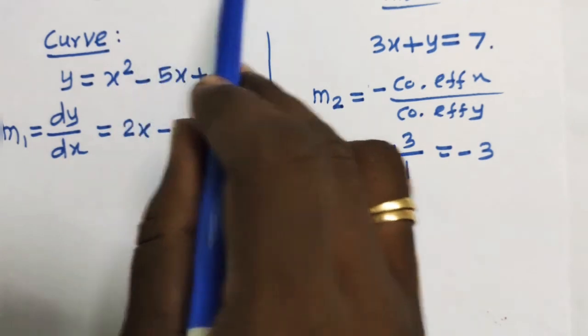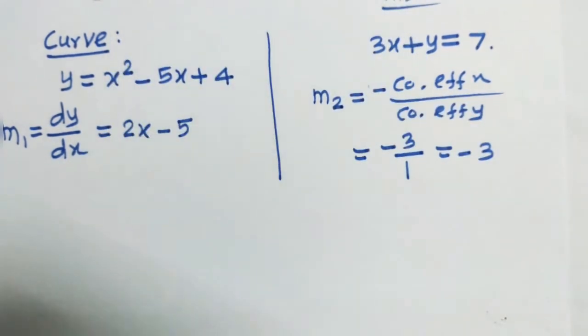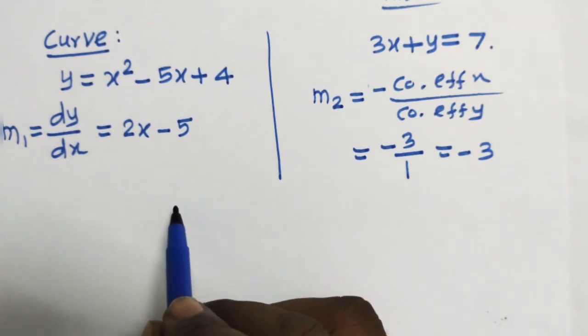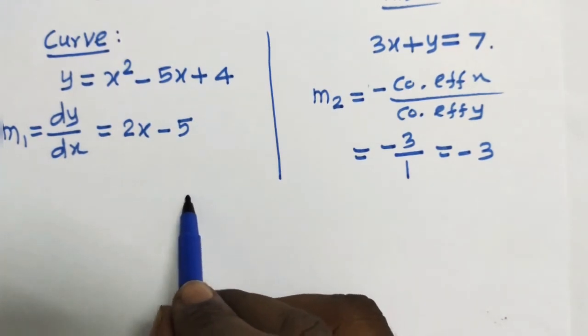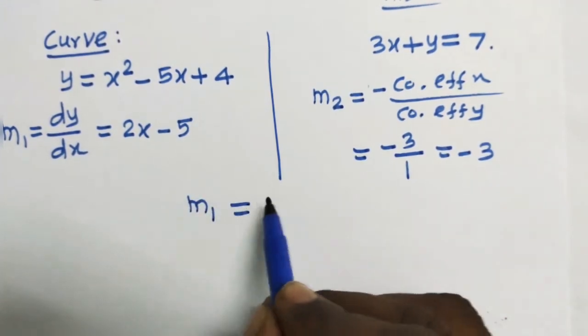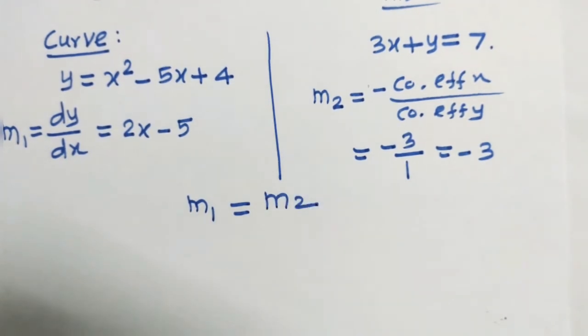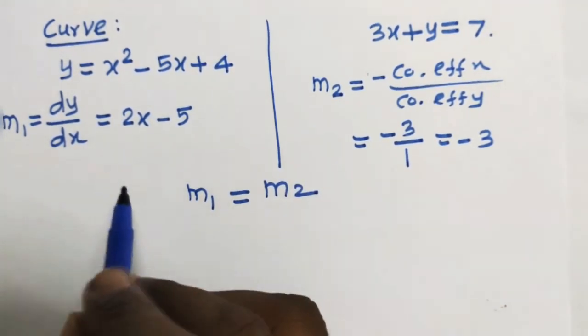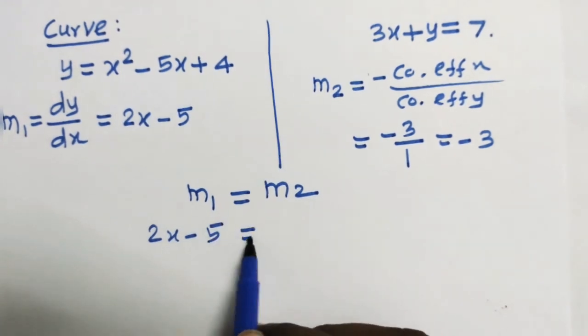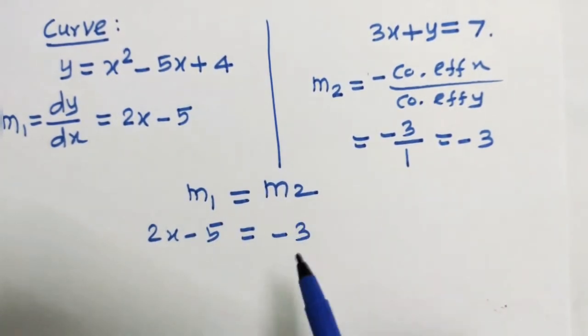Slope of the tangent is parallel to the line. That is why the two slopes are equal. So, parallel slopes are equal. Therefore, m1 is equal to m2. Here m1 is 2x minus 5 which is equal to m2 is minus 3.